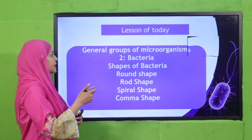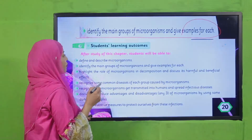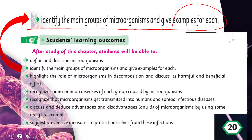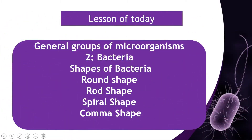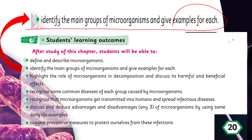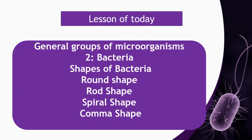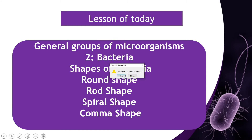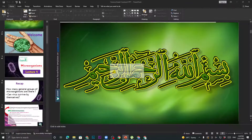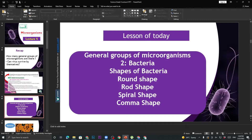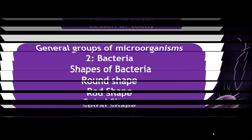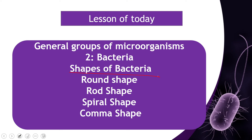In today's lesson, the general group of microorganisms — bacteria in specific — will be discussed. We will discuss about the shapes of bacteria: round shape, rod shape, spiral, and comma shape. These are all the different shapes of bacteria.